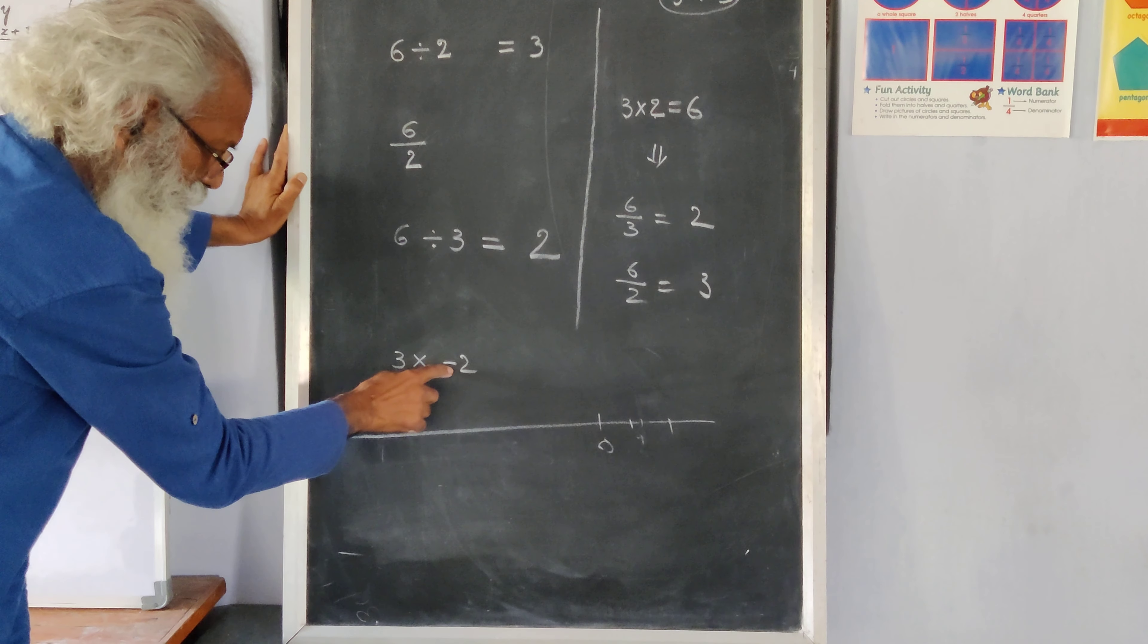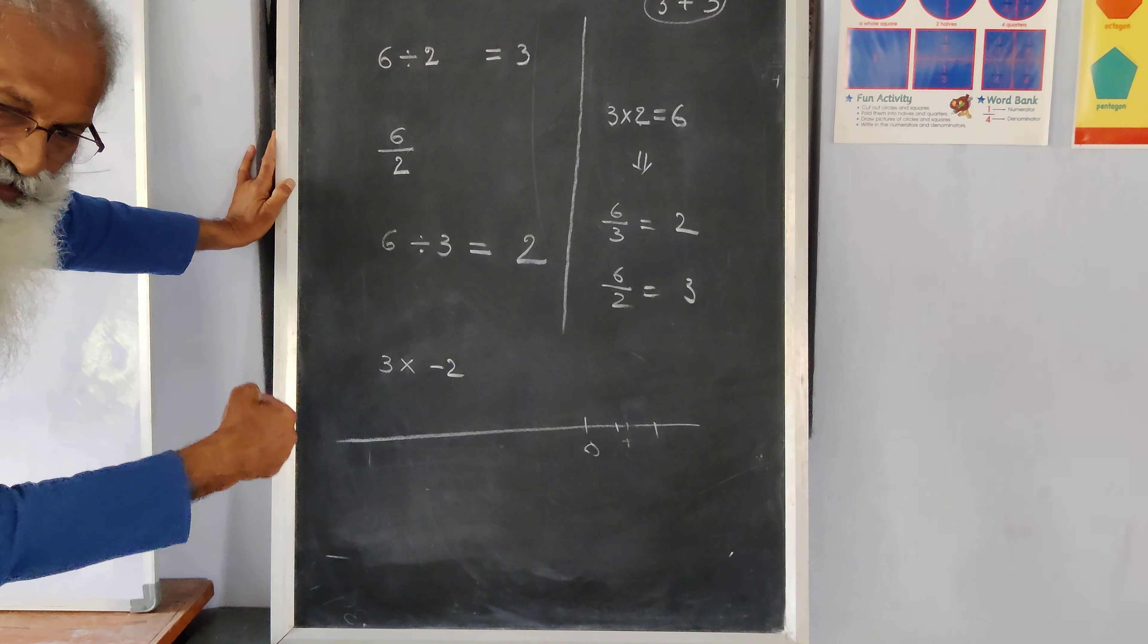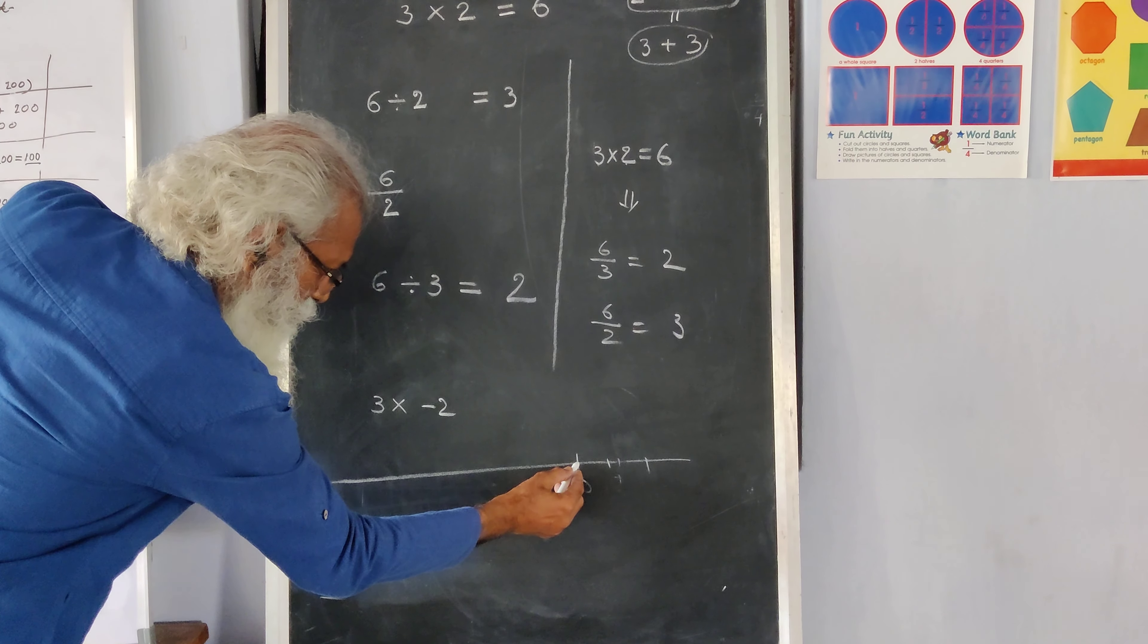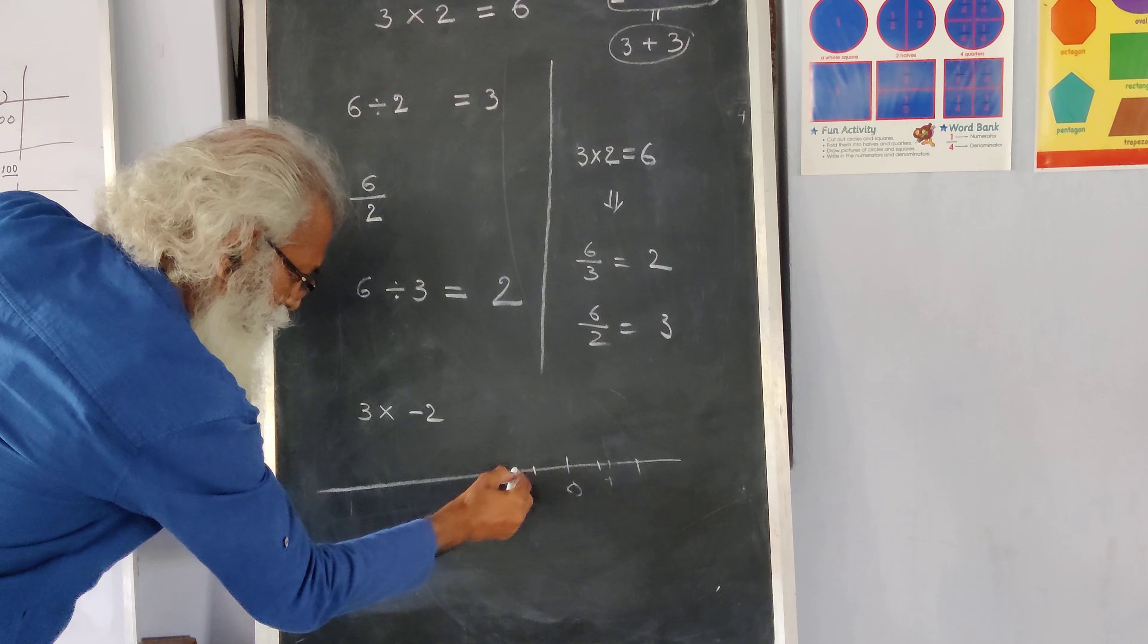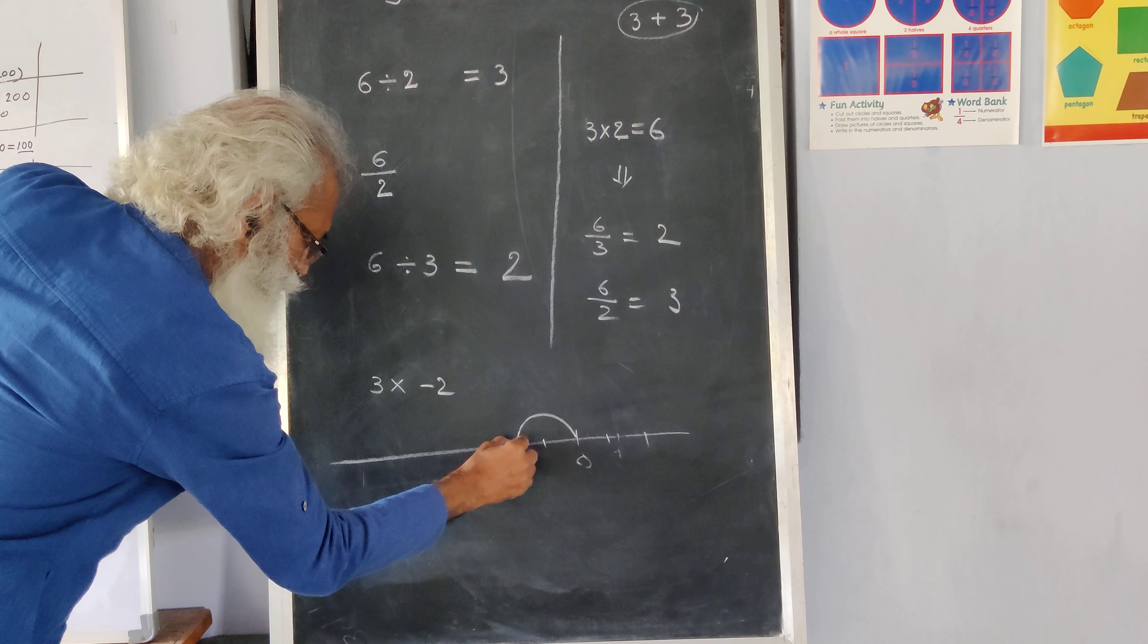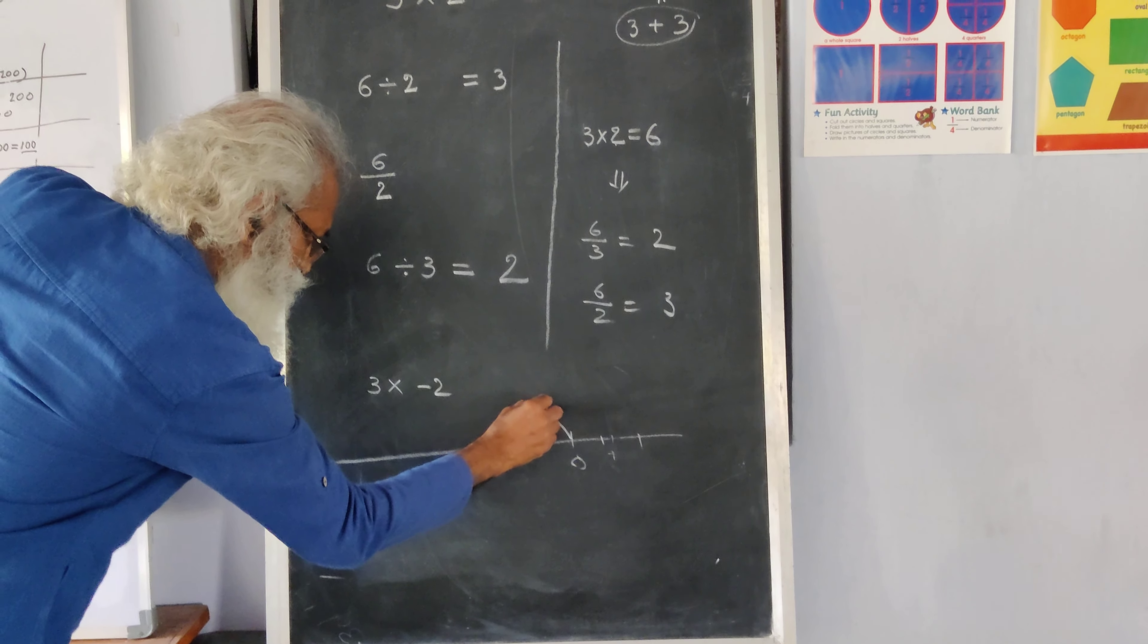So we have to take minus 2 three times. So starting from 0, you go to the left. 1, 2. So the first jump is here. The first minus 2.